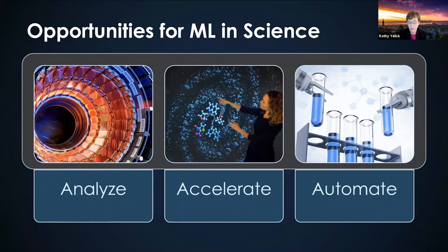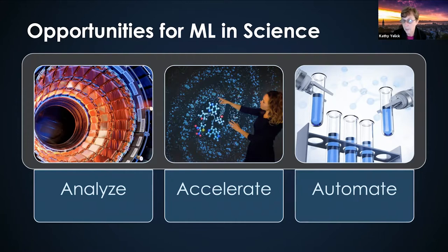Those three categories are probably true whether we're talking about scientific applications or others. We're using machine learning a lot to analyze data. We're also using it to accelerate various kinds of problems we're trying to solve, whether it's the design of new materials or other inverse problems. And we're using it to automate various processes — some experiments have robotics, and we're also using it to automate things like the set of simulations you're going to run.